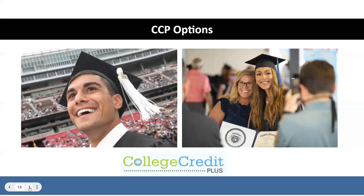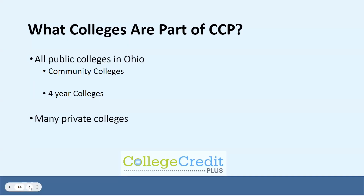Let's discuss the options for CCP. Students can enroll in CCP courses through many different institutions around the state. All public colleges, two-year and four-year, participate in CCP, along with a number of private colleges. In Central Ohio, your public options include Columbus State, COTC, and Ohio State, while Franklin, Kenyon, and Otterbein are your private college options.